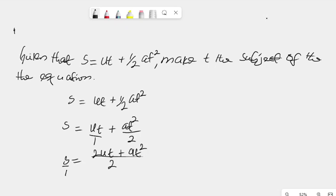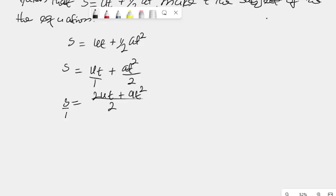That means this S here is equal to 2UT plus AT squared all over 2. Of course, this is over 1. Now, I will cross-multiply. 2UT plus AT squared is equal to S times 2, 2S.